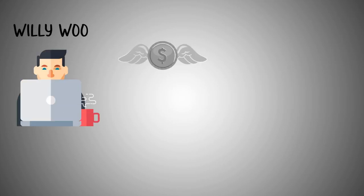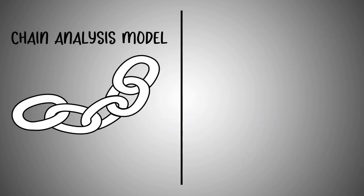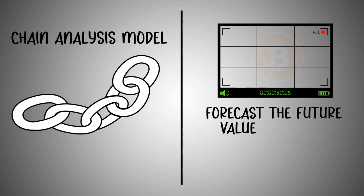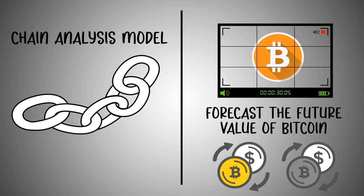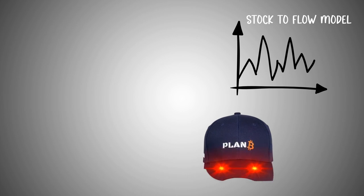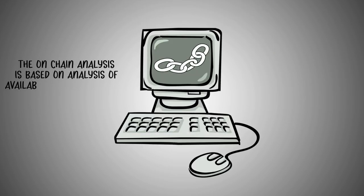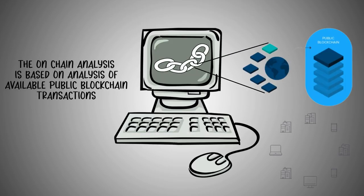Willy Woo, an ex-Angel investor and current cryptocurrency advocate from New Zealand, initiated the on-chain analysis model to forecast the future value of Bitcoin. Unlike the stock-to-flow model by the pseudo-anonymous analyst Plan B, which links the future value of Bitcoin with its scarcity, the on-chain analysis is based on analysis of available public blockchain transactions.